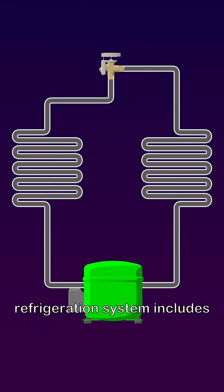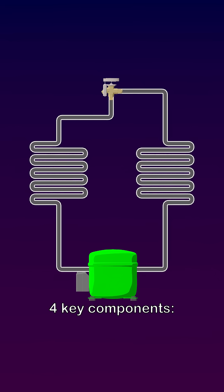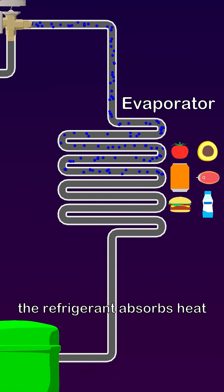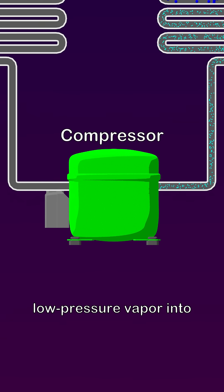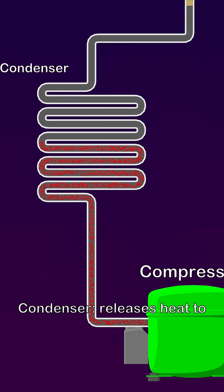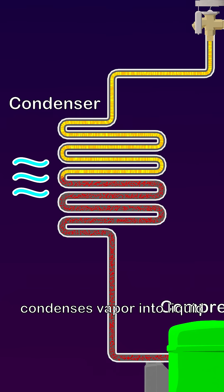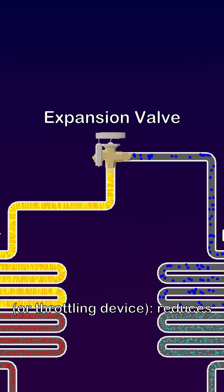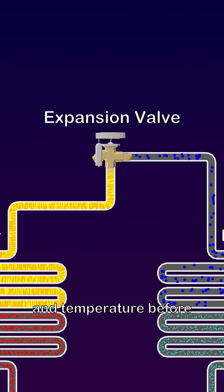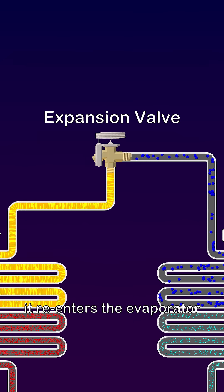A vapor compression refrigeration system includes four key components. Evaporator, where the refrigerant absorbs heat and evaporates. Compressor, compresses low pressure vapor into high pressure vapor. Condenser, releases heat to the surroundings and condenses vapor into liquid. Expansion valve, or throttling device, reduces the refrigerant's pressure and temperature before it re-enters the evaporator.